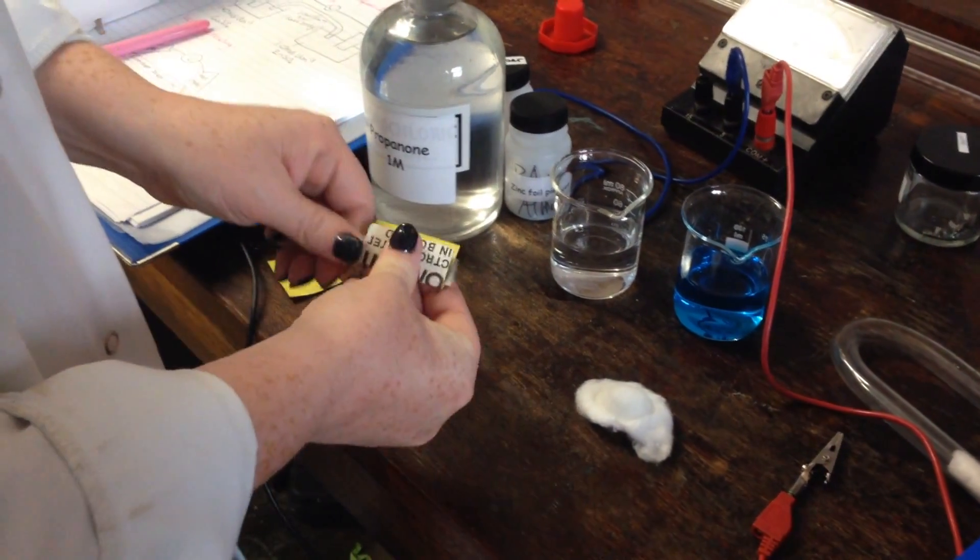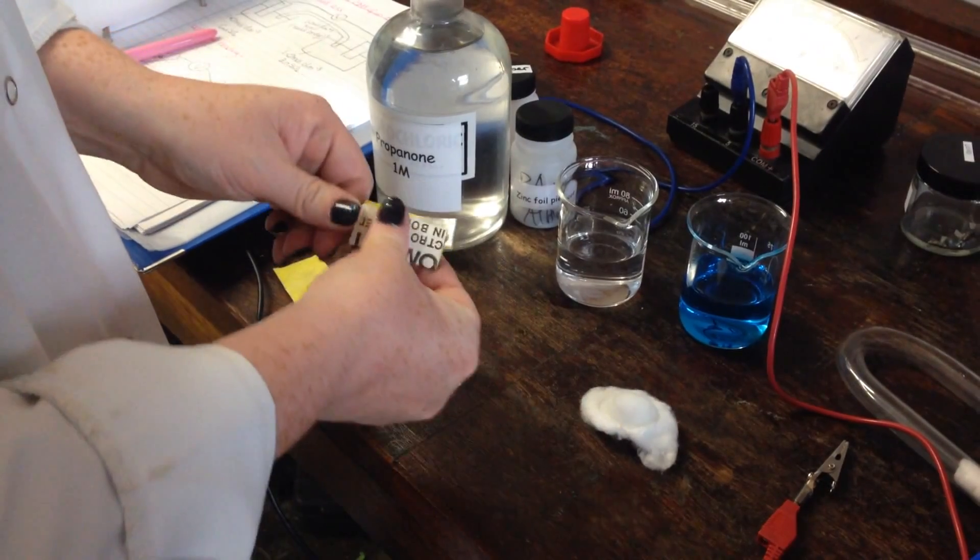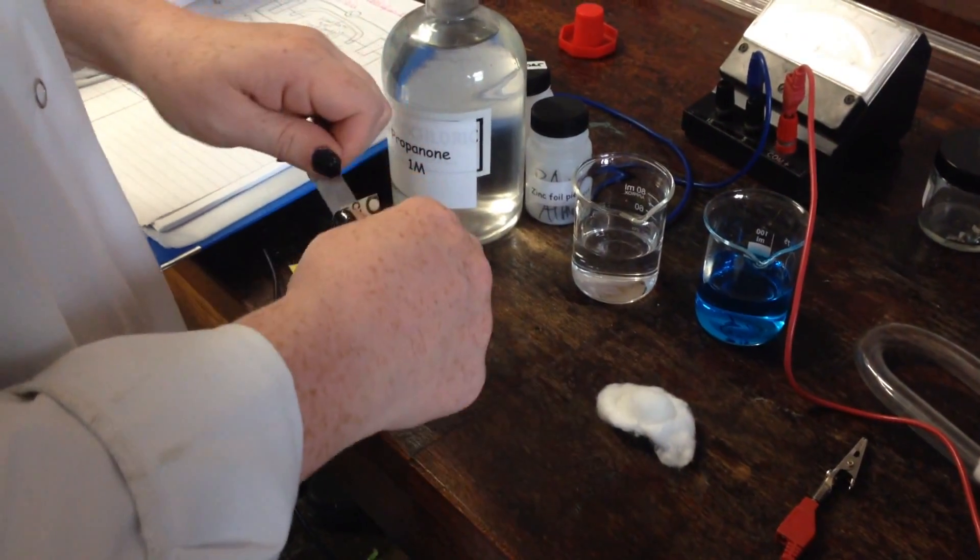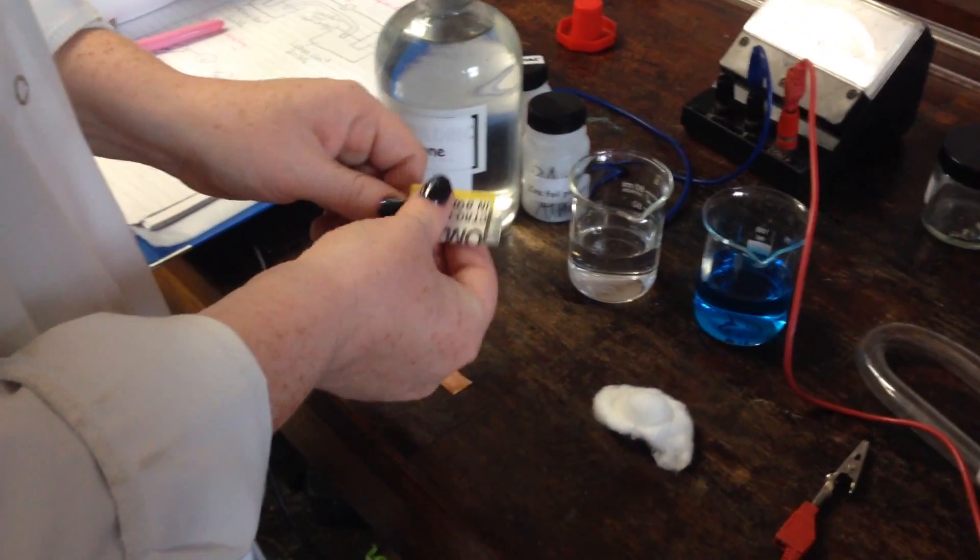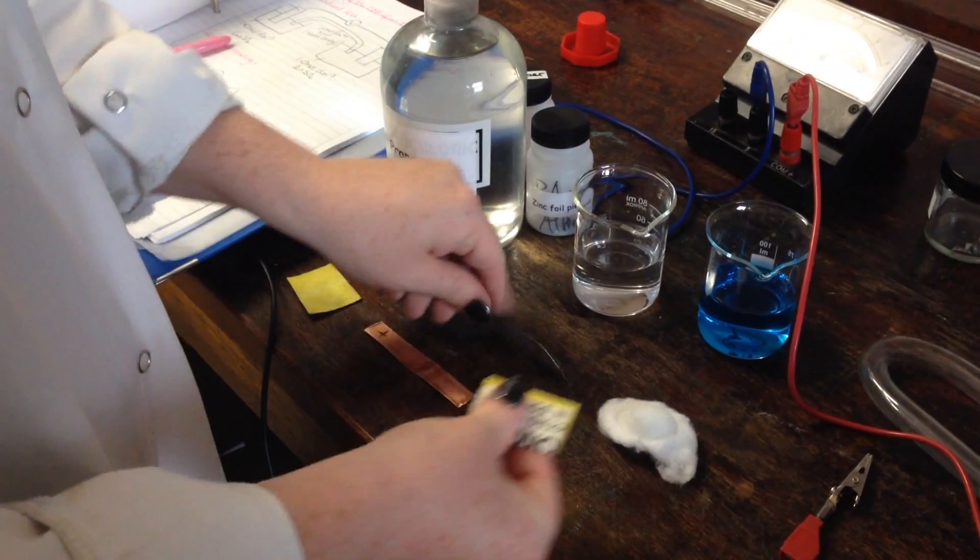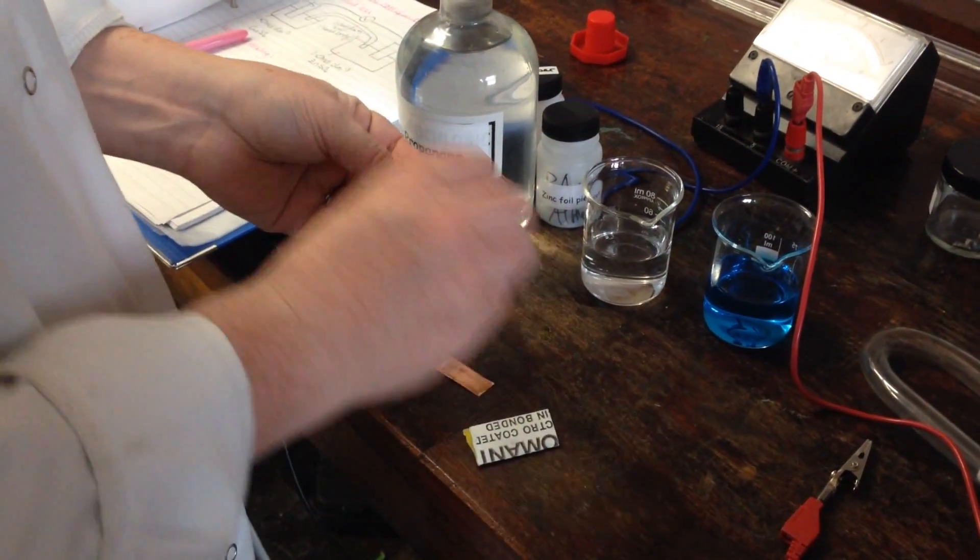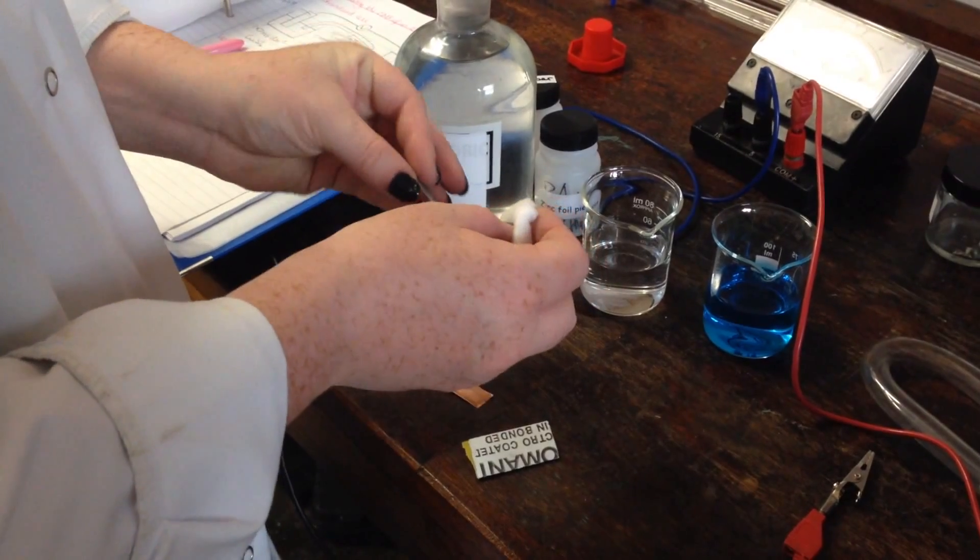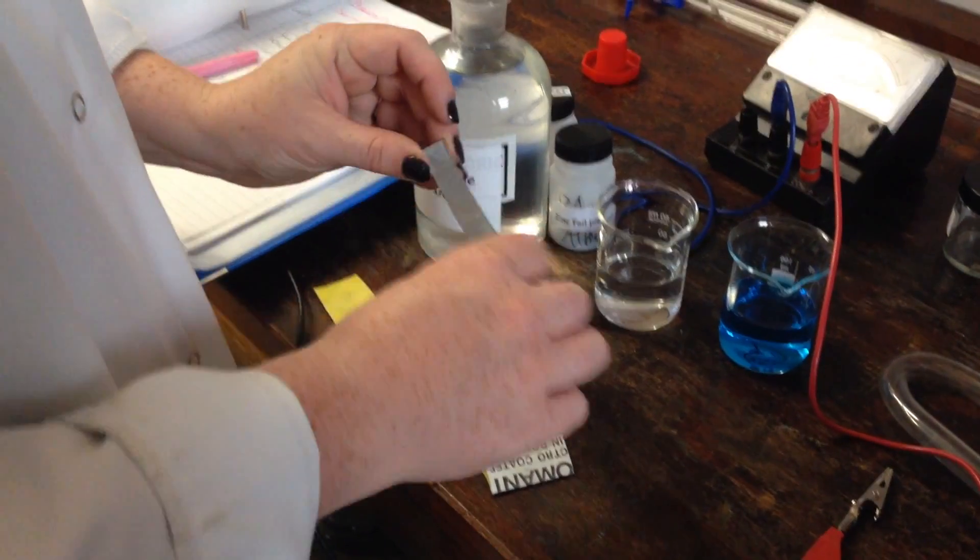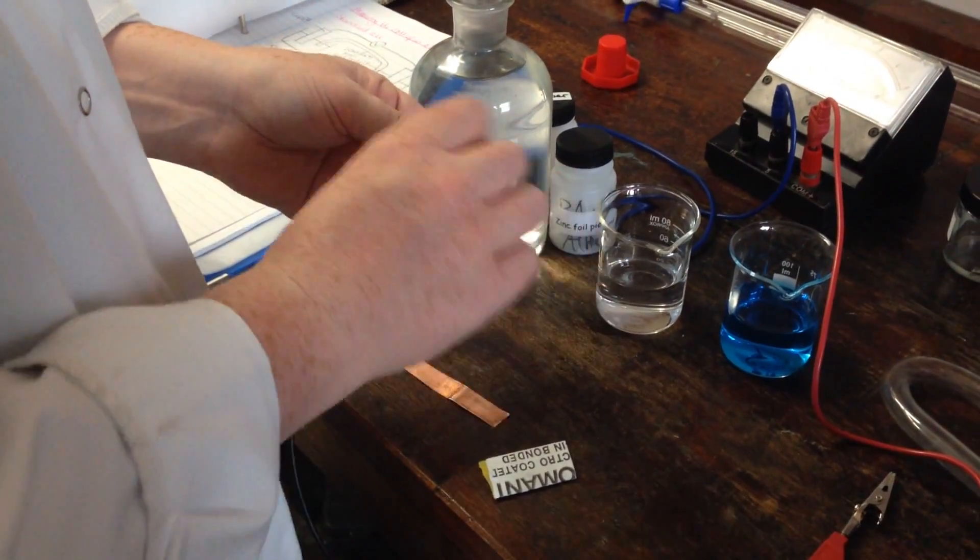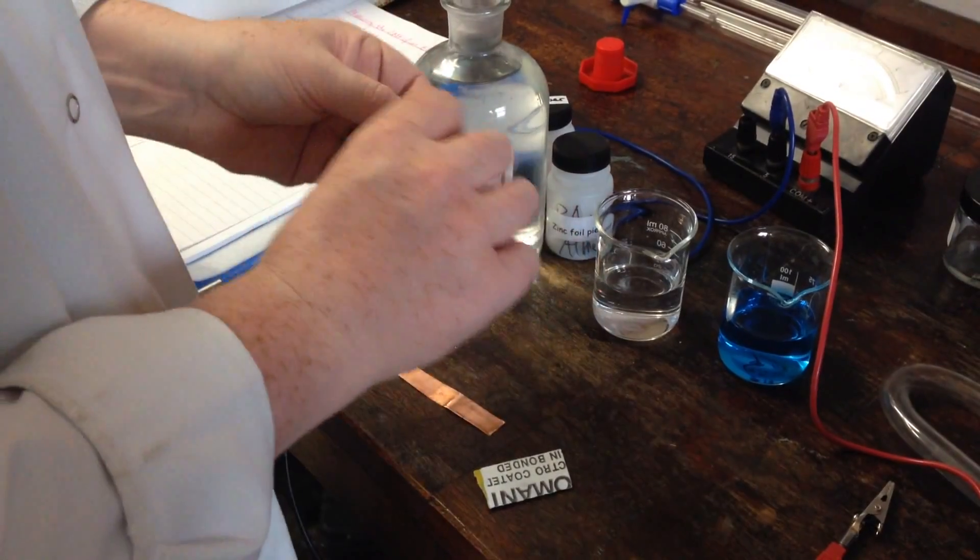The first thing we need to do is to sand them down with bits of emery paper to get any oxidation off the outside or to get any leftover reaction from last time. And then with a bit of propanone on cotton wool, just wipe those down to evaporate off anything else on there and make sure these are as clean as they can be for your experiments.